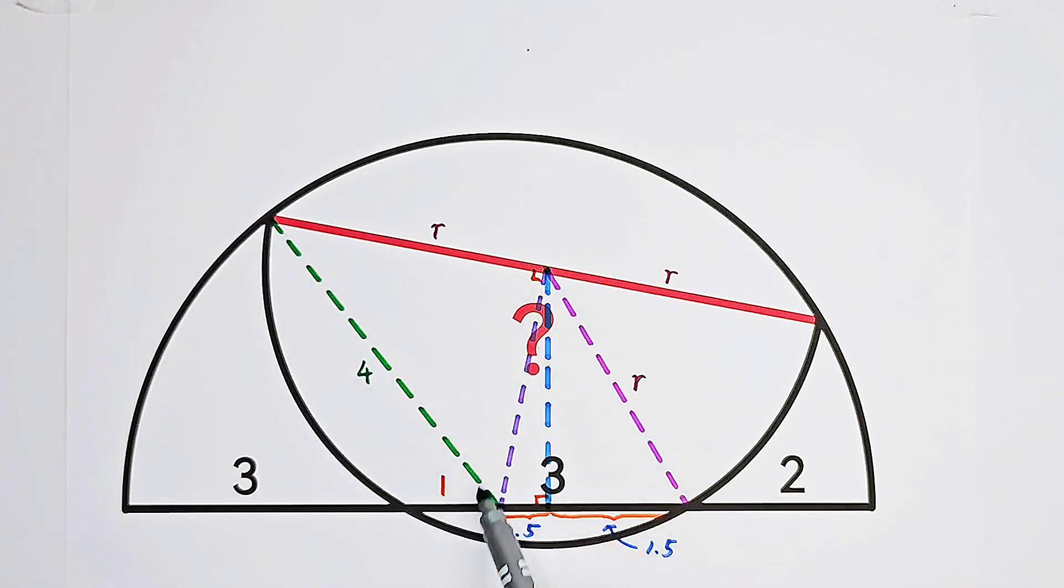We have three right triangles here. If we have three right triangles, then we have three Pythagorean theorems in three right triangles. That implies that we'll have three equations.